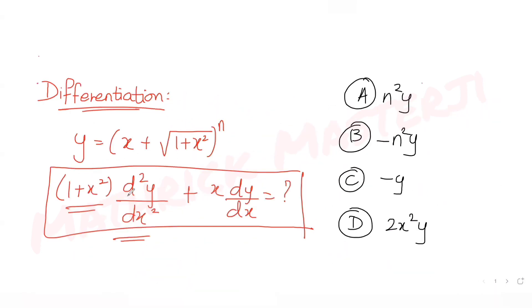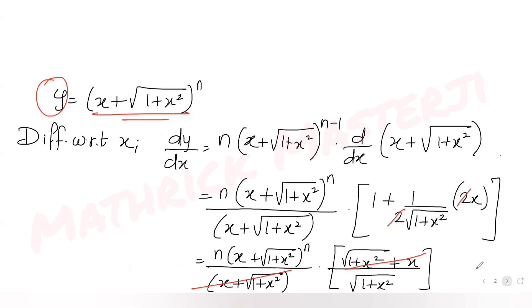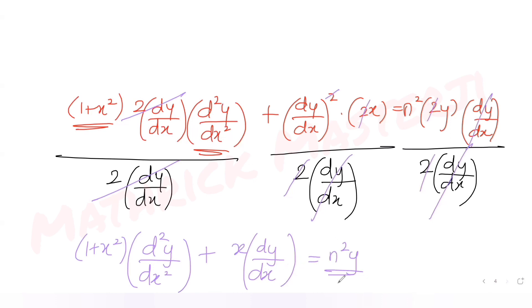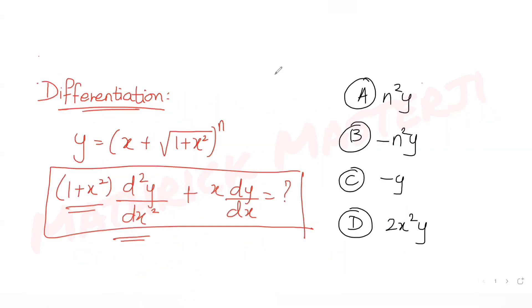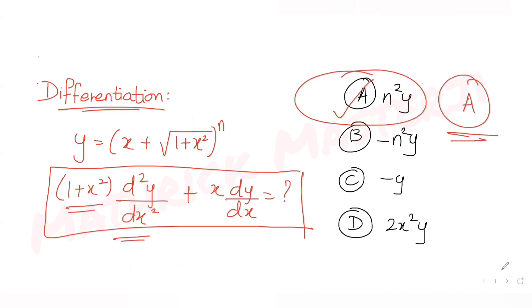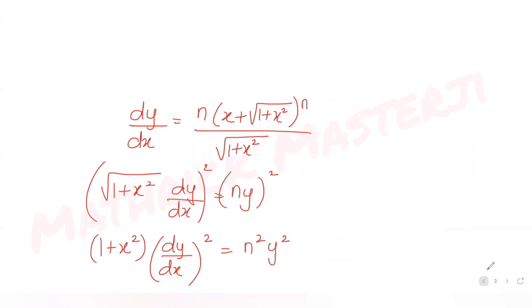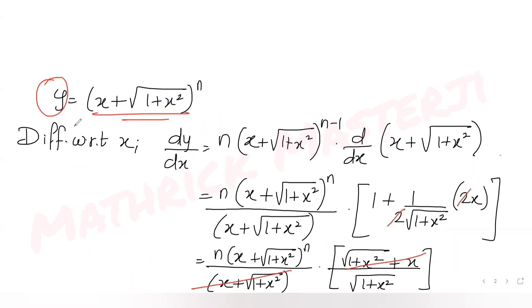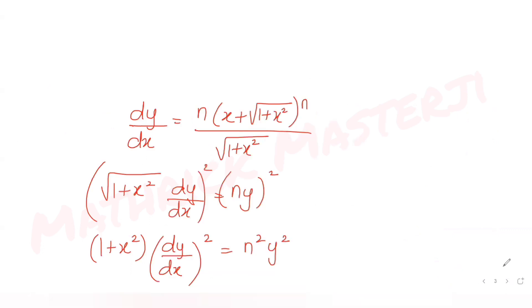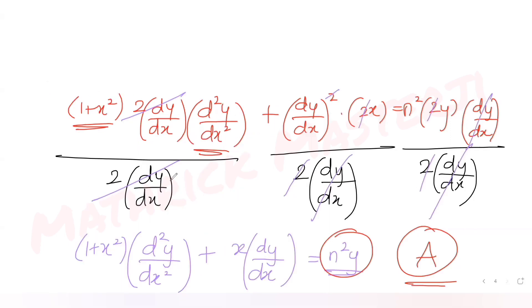So the first term is (1 + x²)·d²y/dx² and the second term is x·dy/dx, giving n²y. The answer choice that matches is option A — n²y. To summarize: we differentiated y, rewrote dy/dx in terms of y, moved √(1 + x²) to the other side, squared, differentiated again, then divided by 2·dy/dx to get the final result n²y.